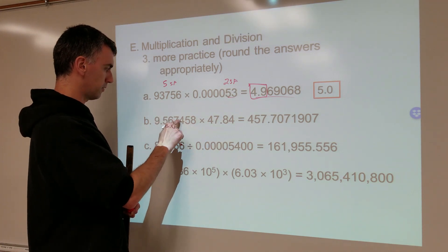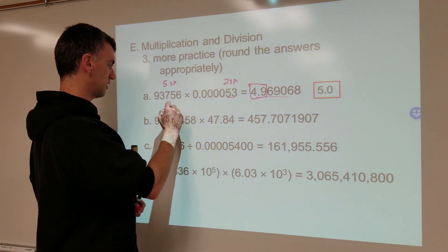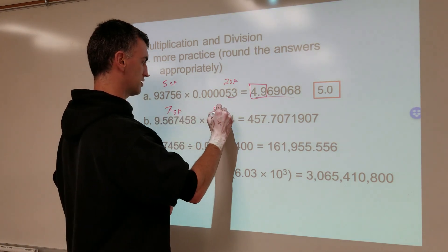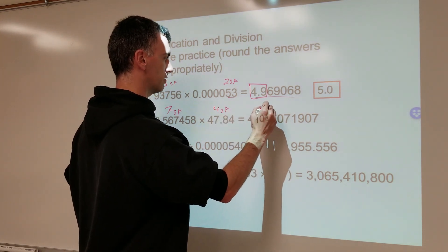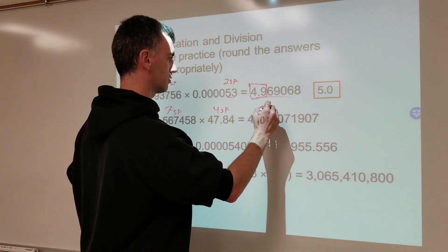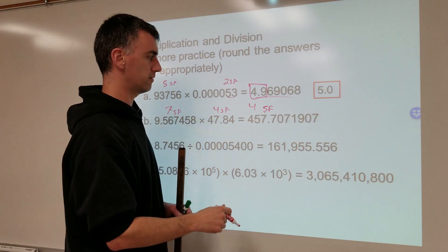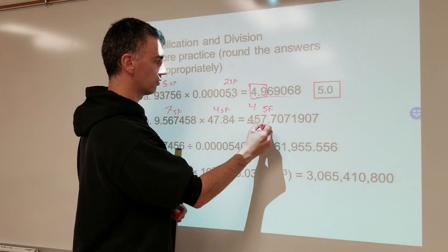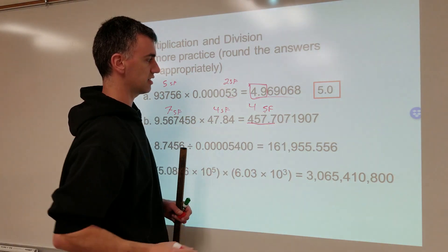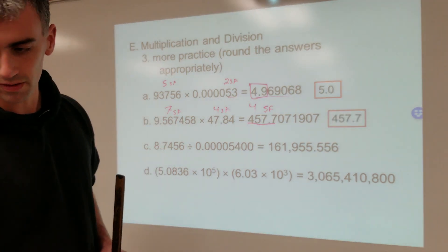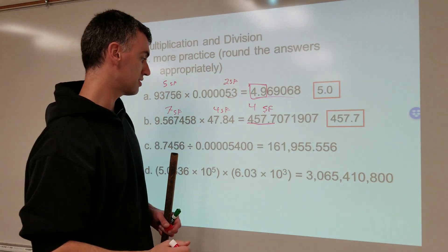One number has seven significant figures and the other has four sig figs, so your final rounded answer should have four significant figures — one, two, three, four. That seven is next to a zero, so it stays a seven: 457.7.